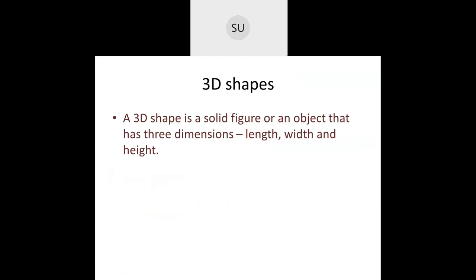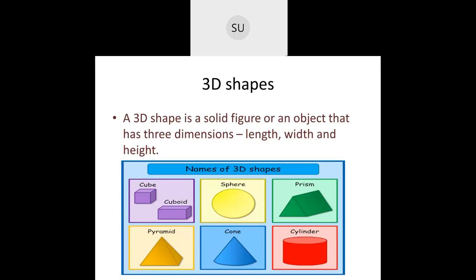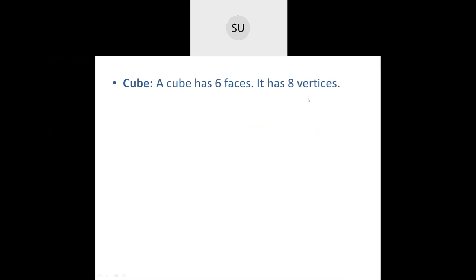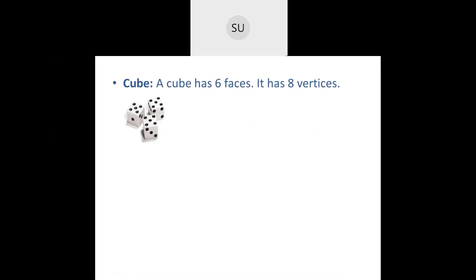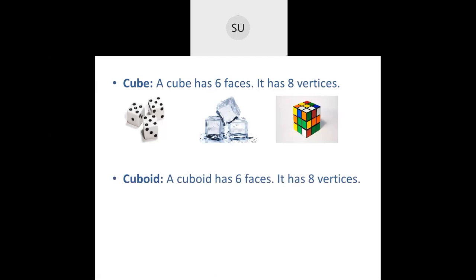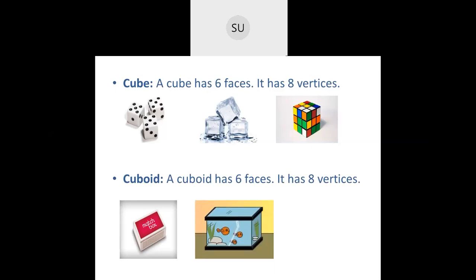A 3D shape is a solid object with three dimensions — length, width, and height or thickness. The 3D shapes include cube, cuboid, sphere, prism, pyramids, cones, and cylinders. A cube has six faces, eight vertices, and twelve edges. Examples: dice, ice cubes, Rubik's cube. A cuboid also has six faces, eight vertices, and twelve edges. Examples: matchbox, fish tank, compass box.